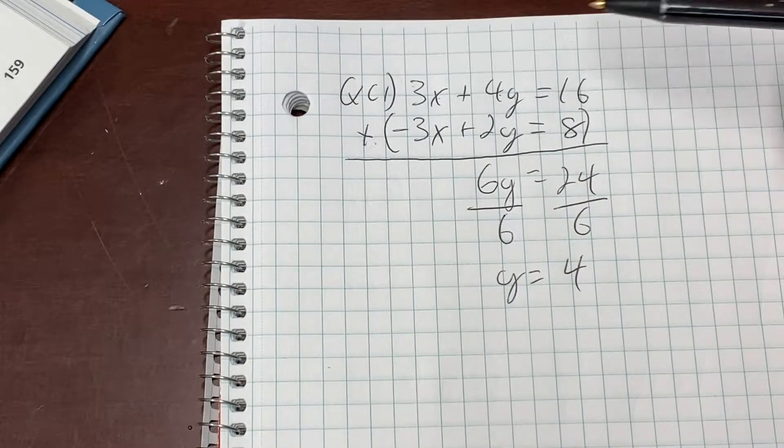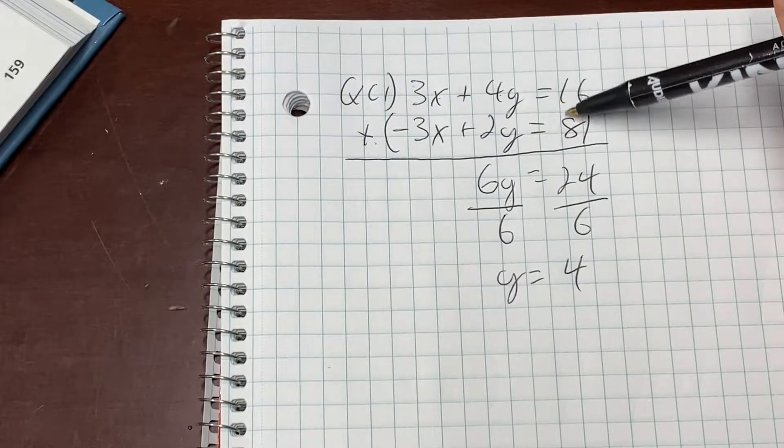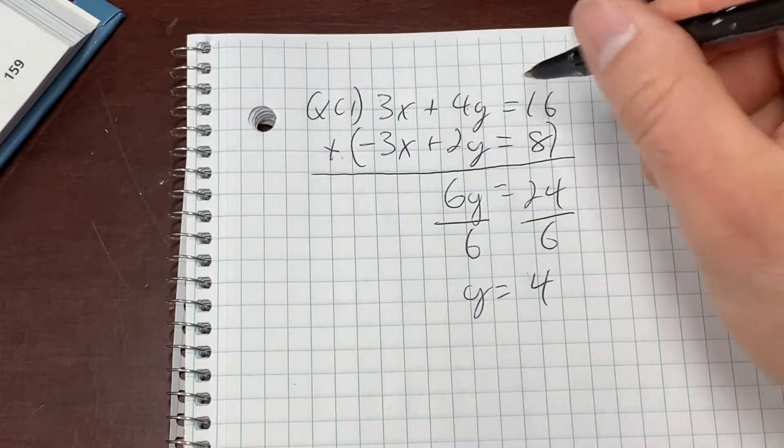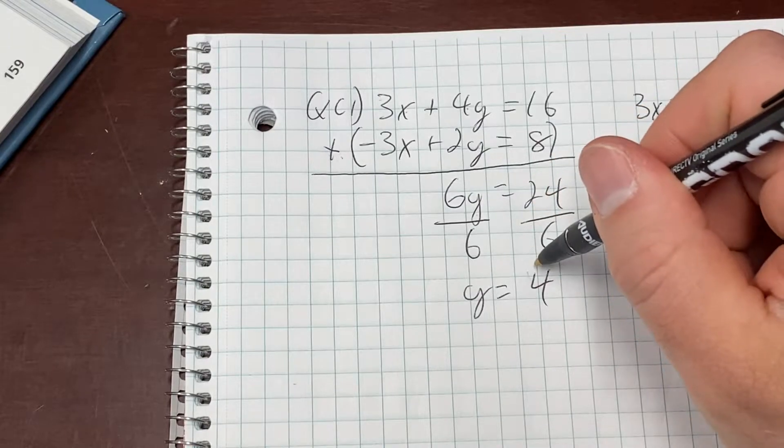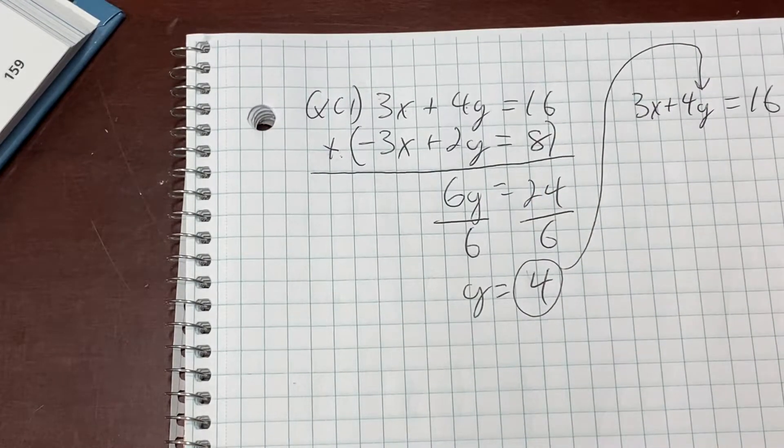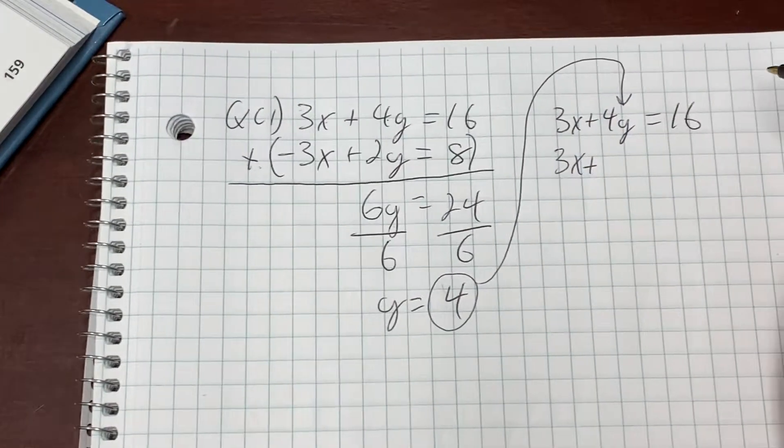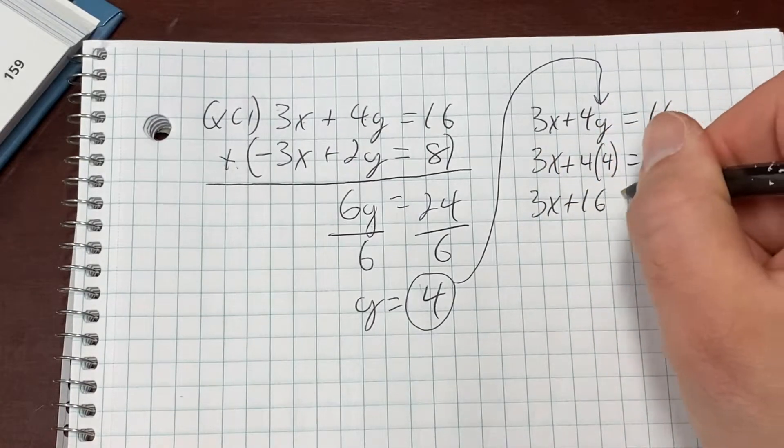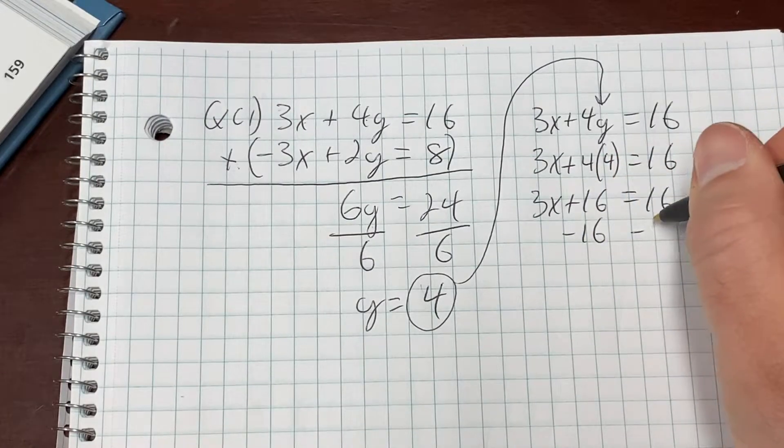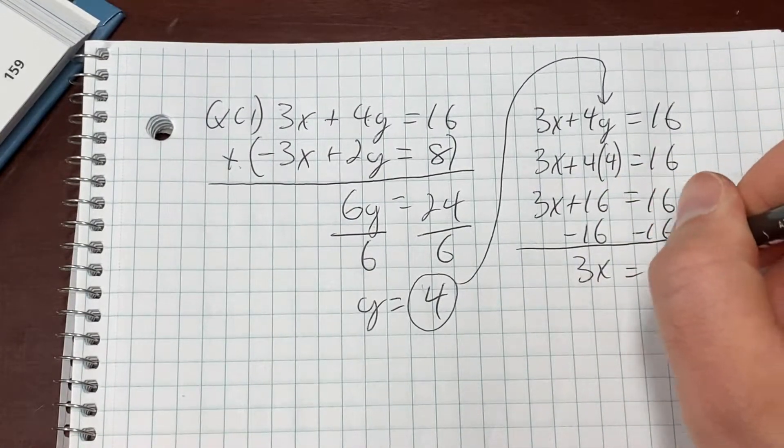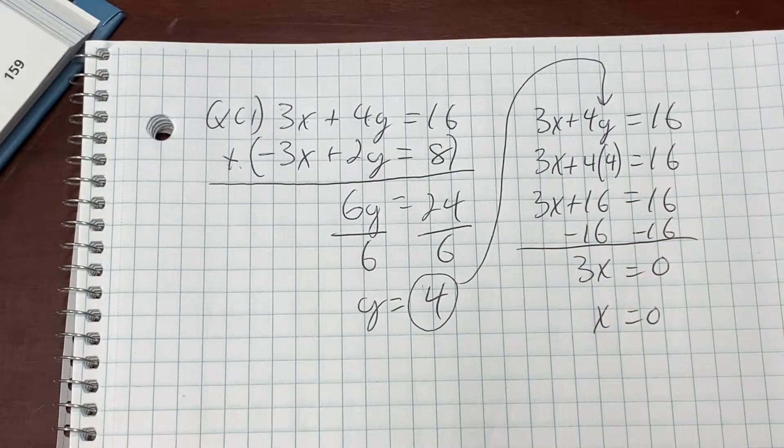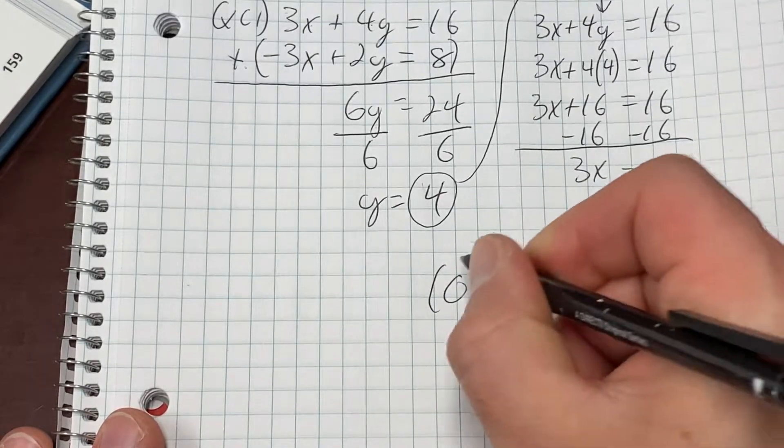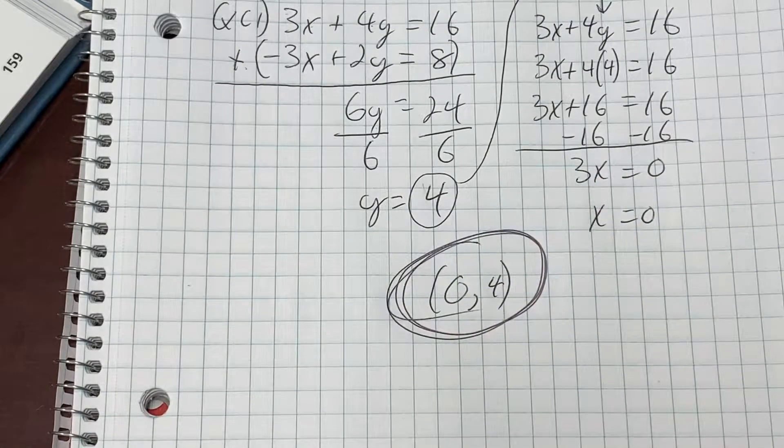We eliminated the X by just adding these two equations together. We got 6Y equals 24. Divide by six and Y equals four. Now we got to go find X. We have to choose one of these two original equations. It doesn't matter which one you choose. I'm going to choose this top one because everything's positive. 3X plus 4Y equals 16. I'm going to take what Y equals and plug it in for Y. 3X plus 16 equals 16. Subtract 16 from both sides. 3X equals 0, which means X equals 0. The solution to this system is (0, 4).